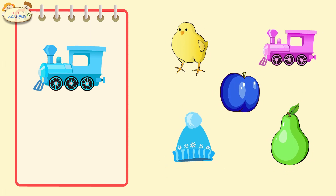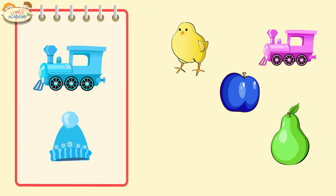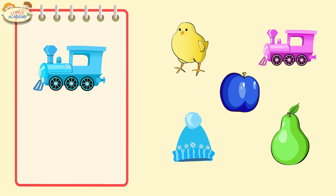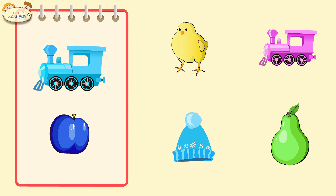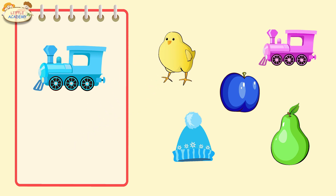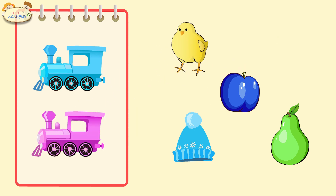Here is a train. Let's look at these objects and find one that's similar. Is this one similar? No, these objects are different. Is this one similar? No, these objects are also different. Maybe this one is similar? No, this one is also different. Maybe this one? No, it's different. Then maybe this one? Yes, that's correct — these trains are similar.